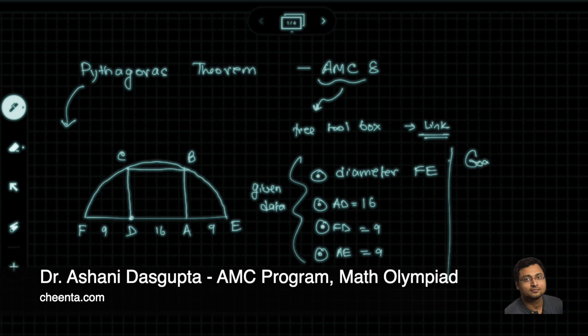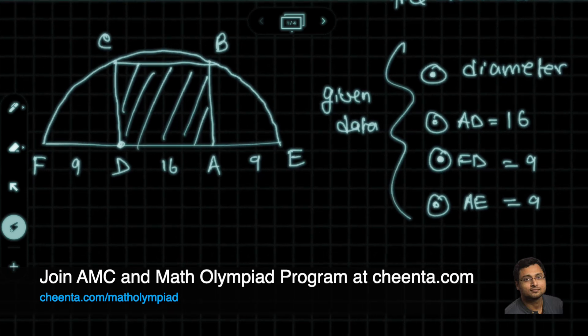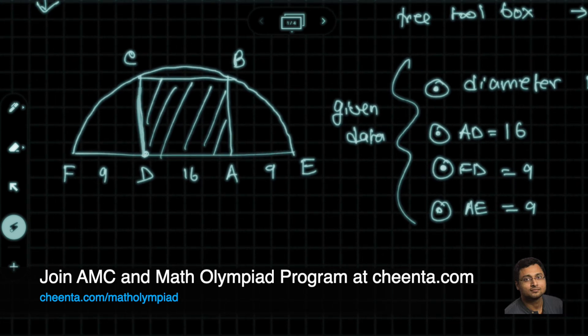Our goal is to find out the area of ABCD. Since we know AD, that is 16, all we need to know is the length of CD.